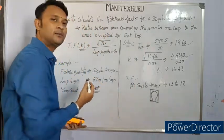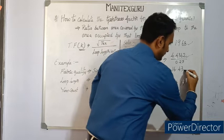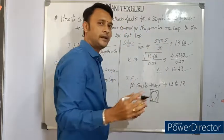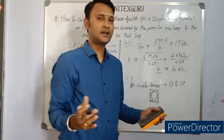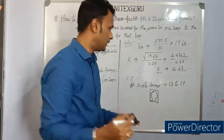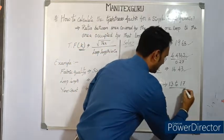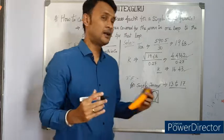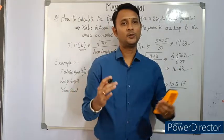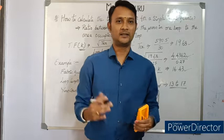In general, for any single jersey fabric, the tightness factor needs to be in between 13 to 17. As much as the loop length is tightened, the tightness factor will get increased. As much as you loosen the loop length, the tightness factor will get reduced.